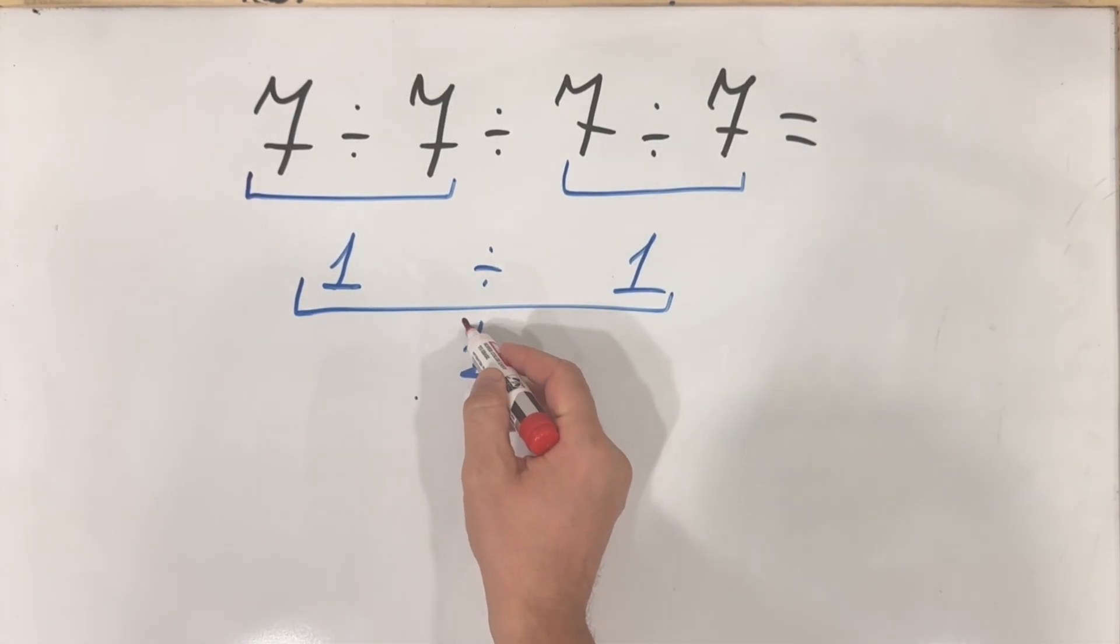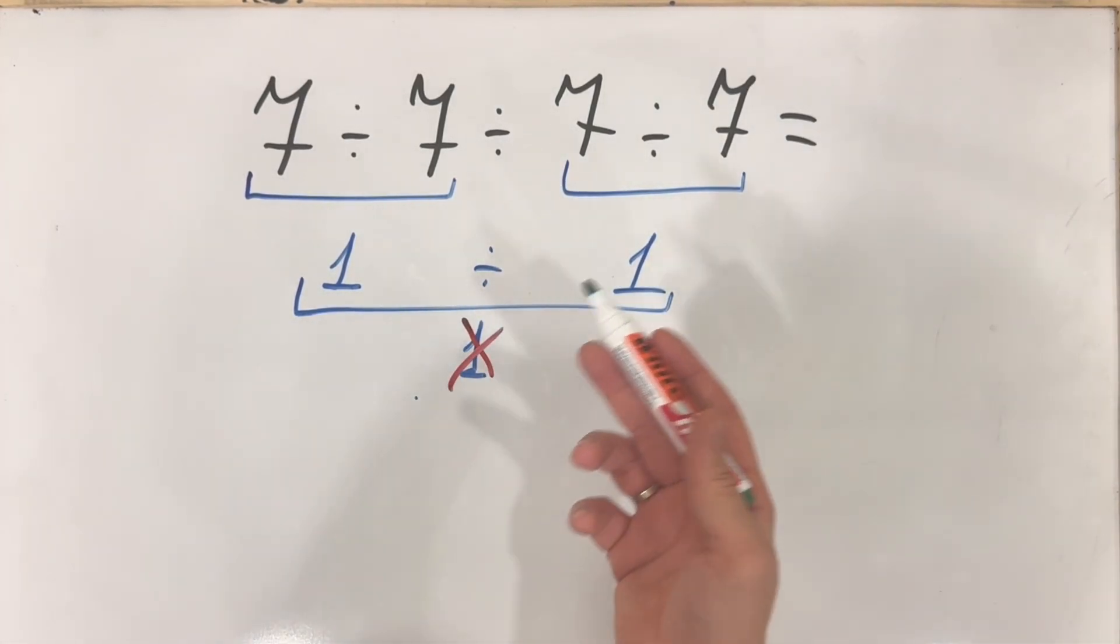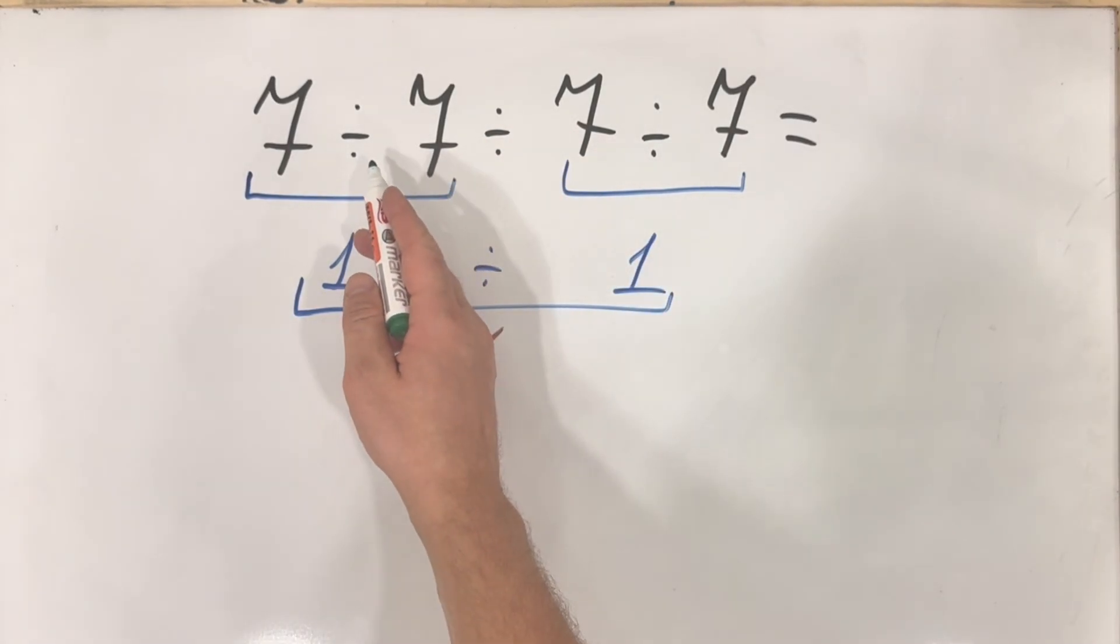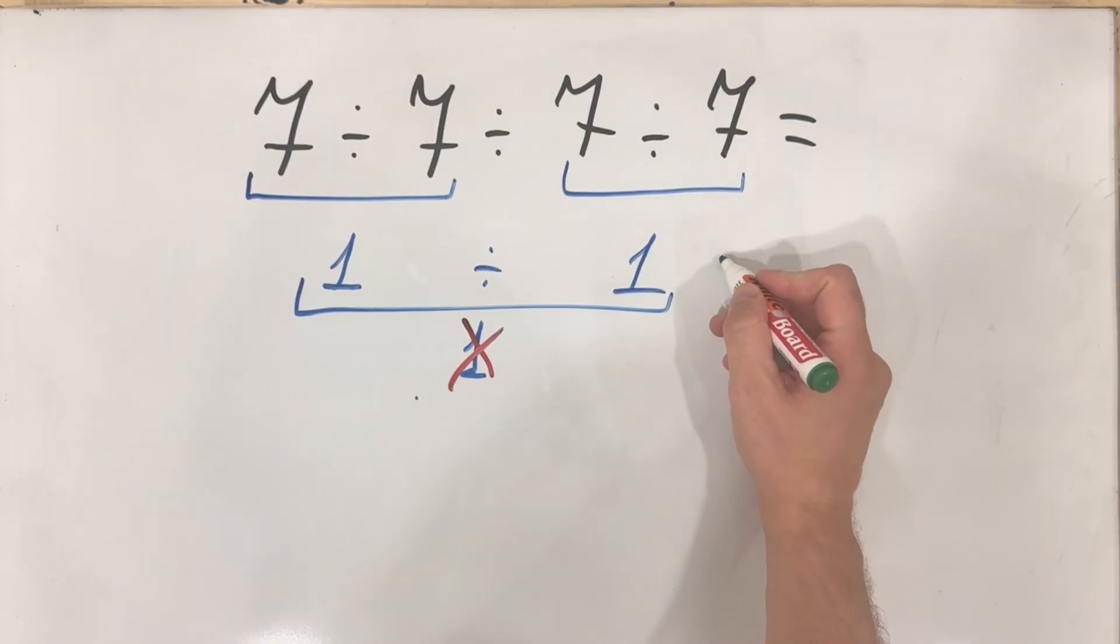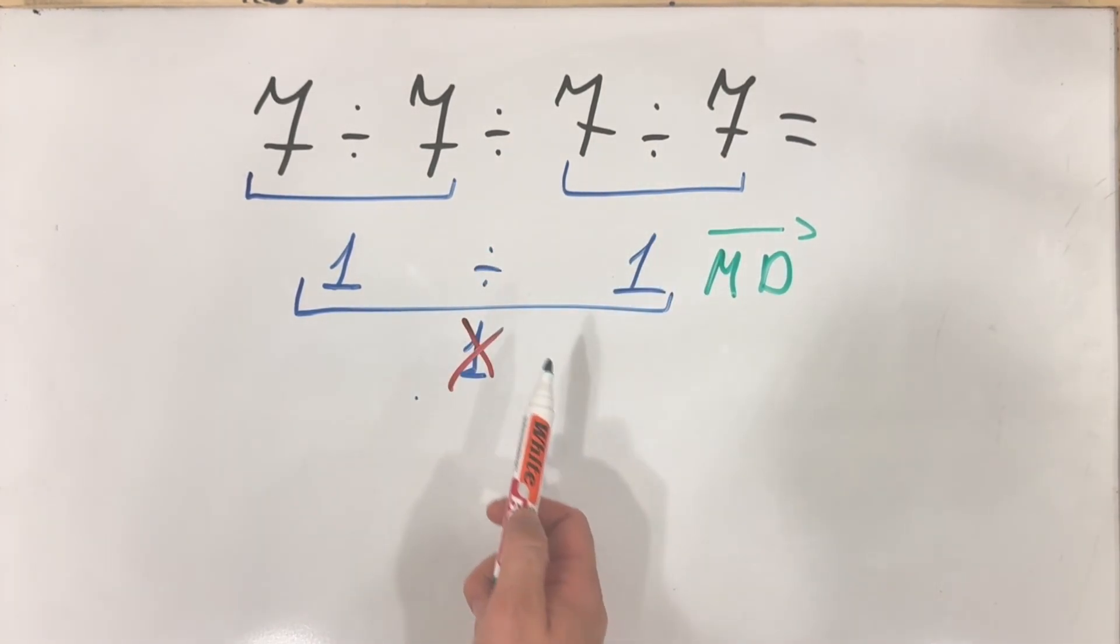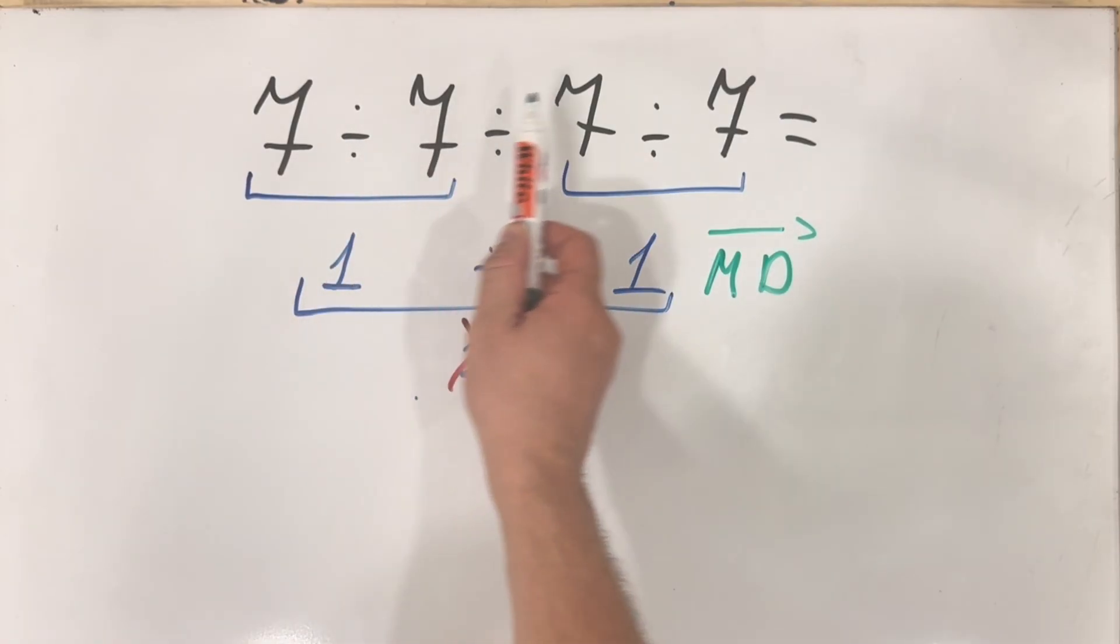But this answer is not correct. Why? Because according to the order of operation, when we have division and or multiplication, we must do it from left to right. So even if now we have only division, still we must do it from left to right.